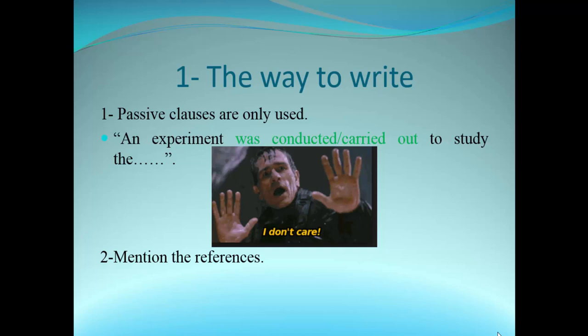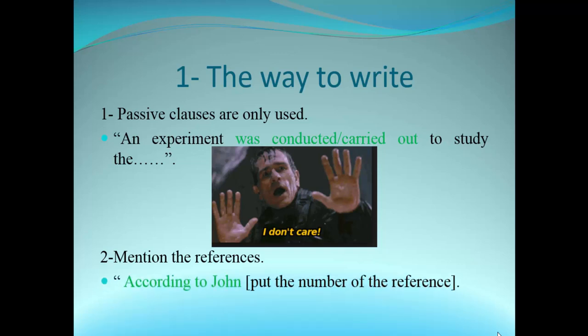You must mention the references you used — in other words, the literature. You have to carry out a literature review. For example, according to John — John is a researcher who published a paper or thesis and you used some of his work. You must know about plagiarism: you cannot copy and paste his exact lines; you have to rewrite it yourself with the same meaning. Write 'according to John [1],' where the number is the reference number. We'll discuss these details later.